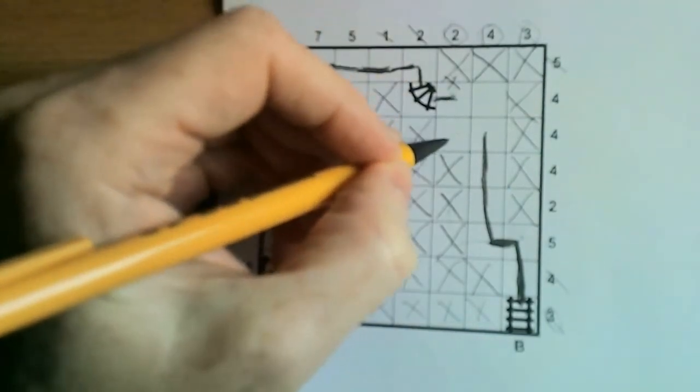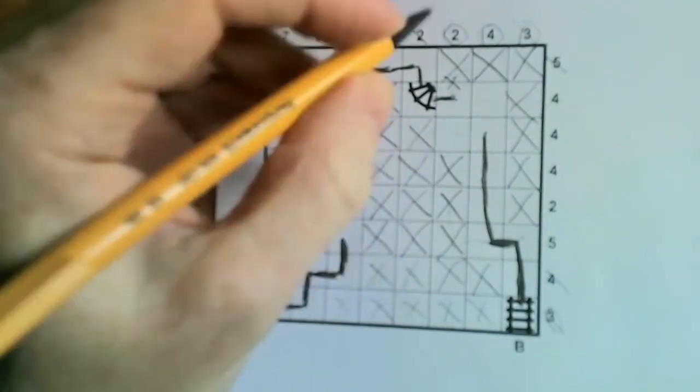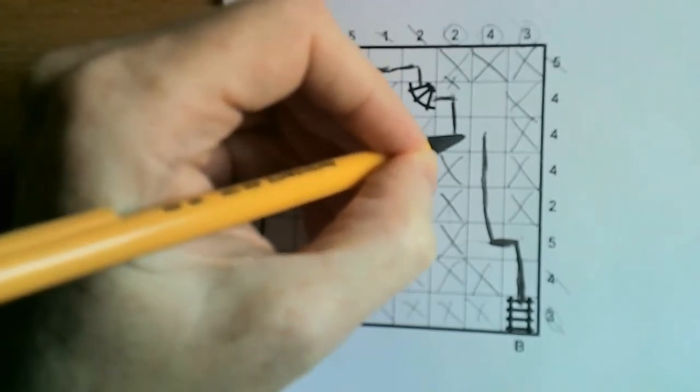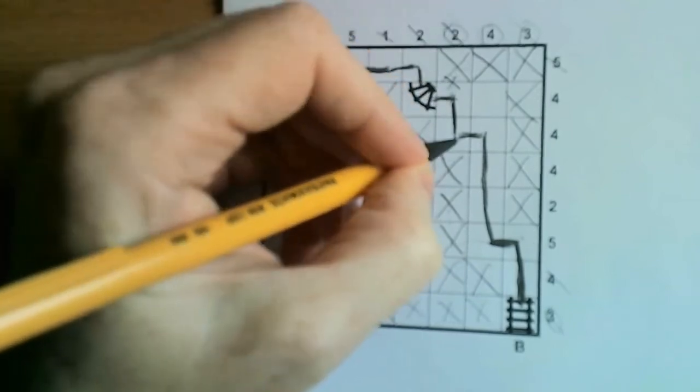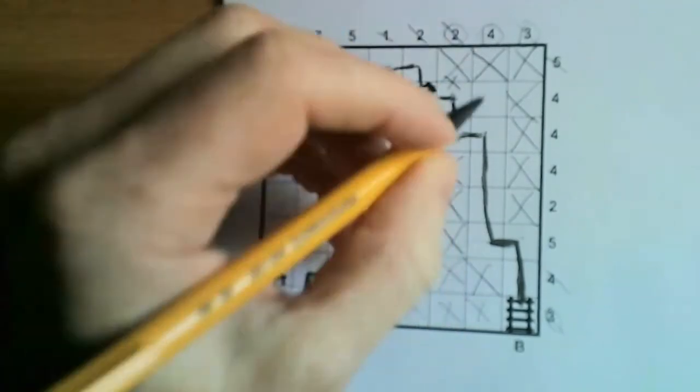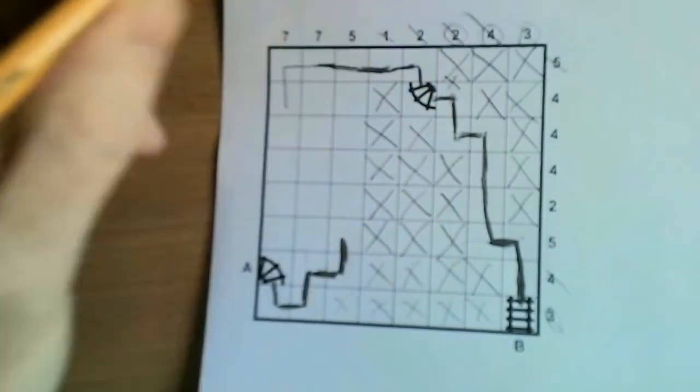And so therefore it must come to there. Now this has two, there's only one option left. So it must come down like that and across there. And that gives us our two and our four. One, two, three, four.